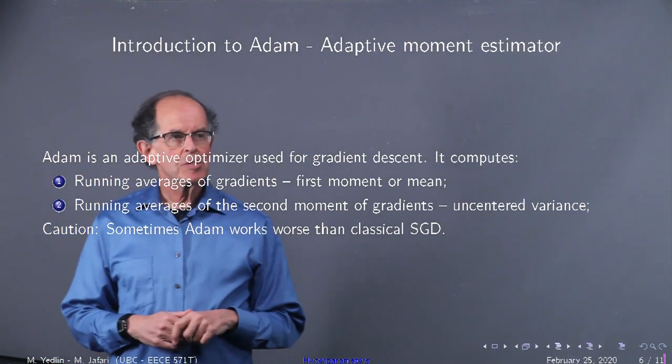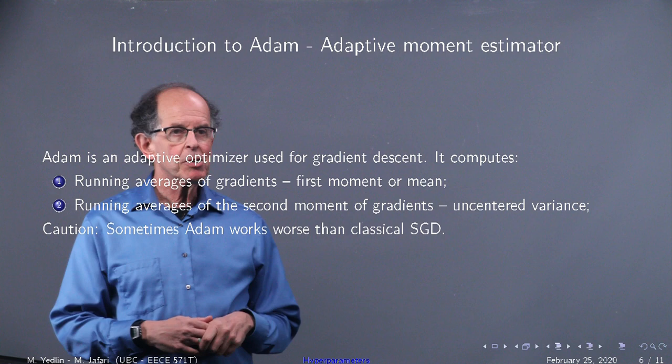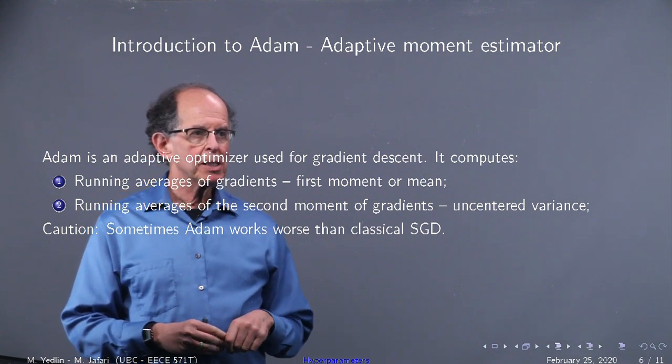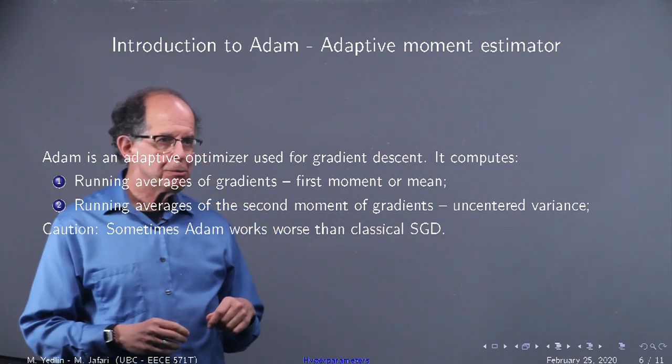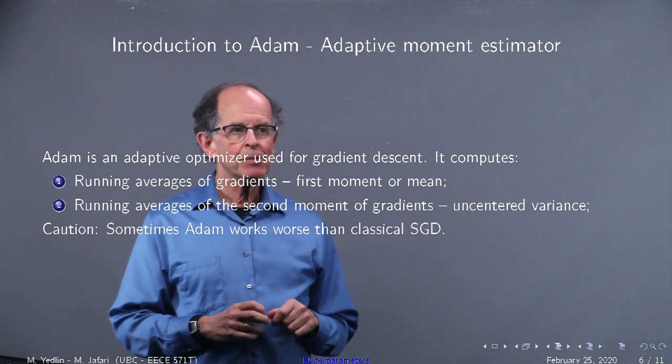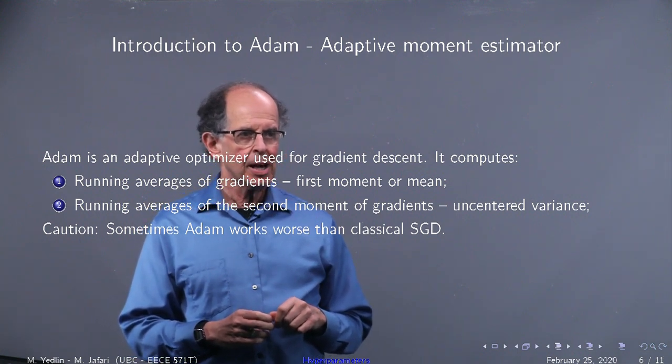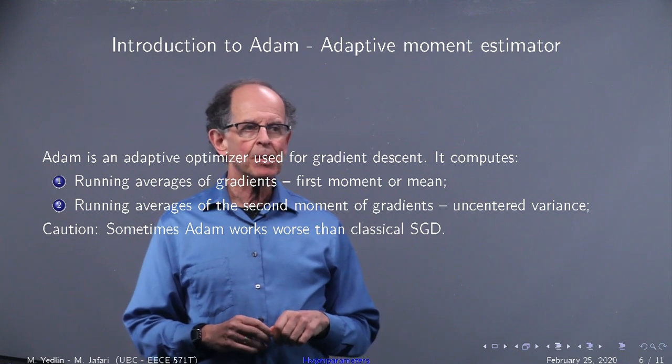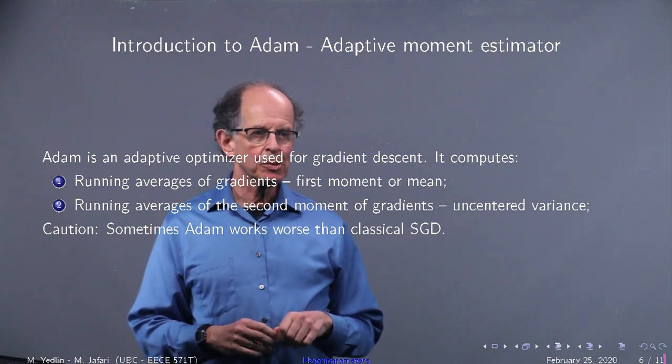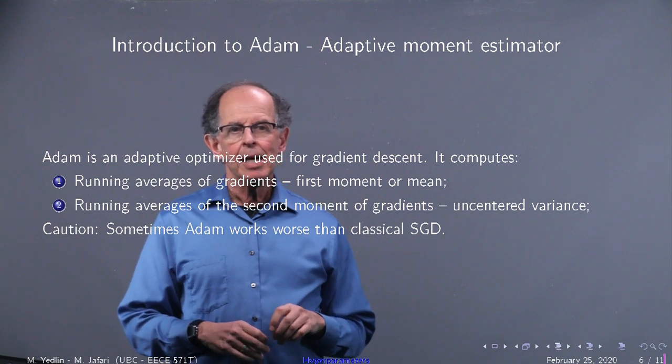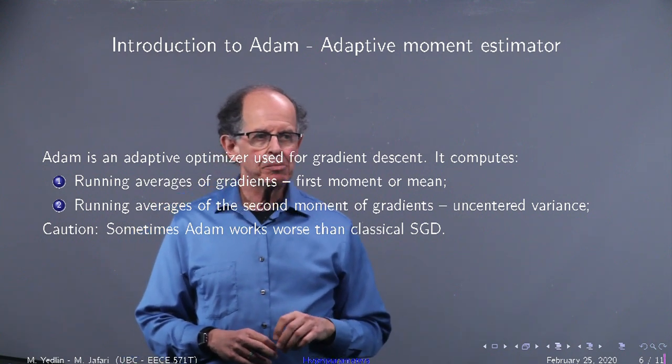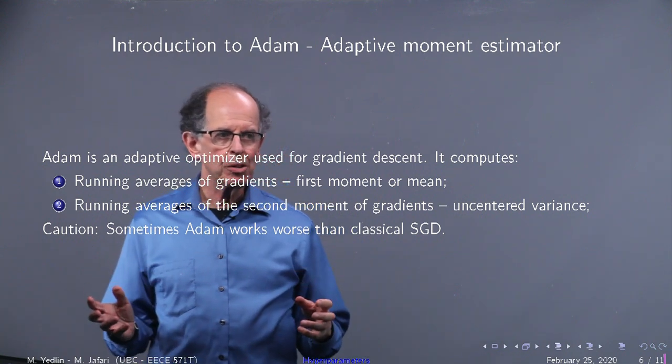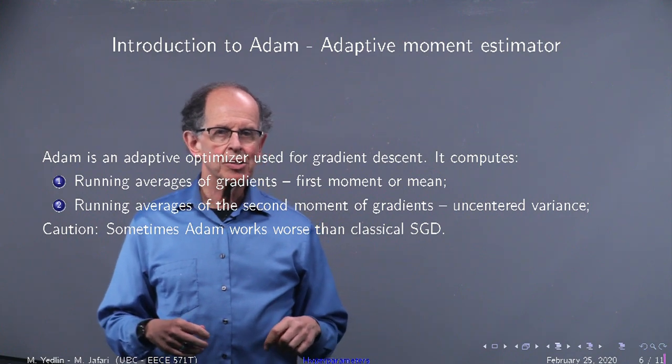Which leads us to Adam, standing for adaptive moment estimator. It computes running averages of gradients, first moment or mean, and running averages of the second moment of gradients which is the uncentered variance. Caution: Adam is complicated. Sometimes Adam works worse than classical SGD.